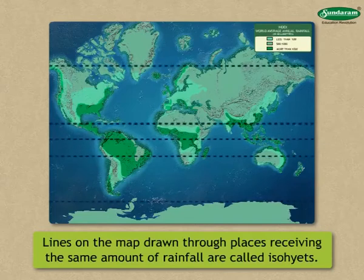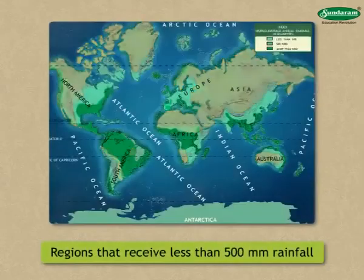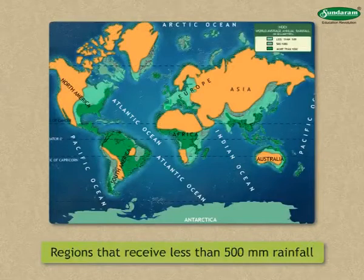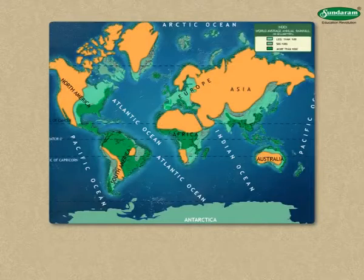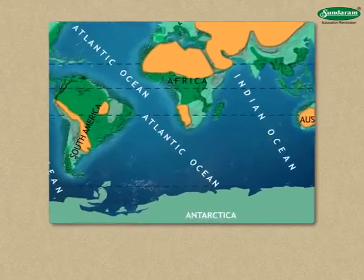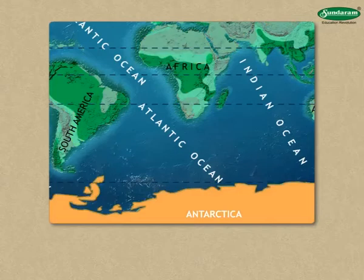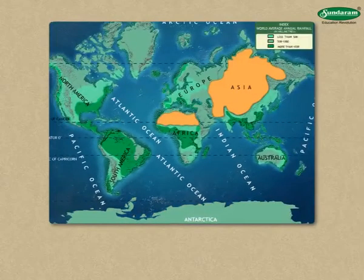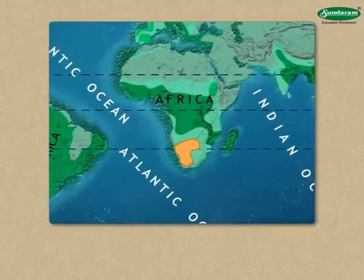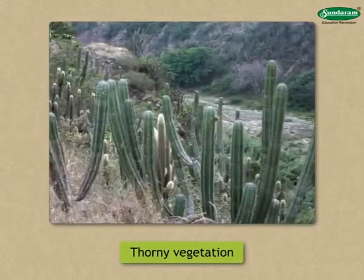Areas of low rainfall: Regions that receive less than 500 mm of rainfall are included in this category. A very large portion of the land area on the earth is included in the low rainfall area. It comprises cold deserts lying to the extreme north of the continents, the continent of Antarctica, the interior part of Asia and Africa, the Kalahari Desert in South Africa, and the desert region of Central Australia. In a region of low rainfall, thorny vegetation is mainly found.